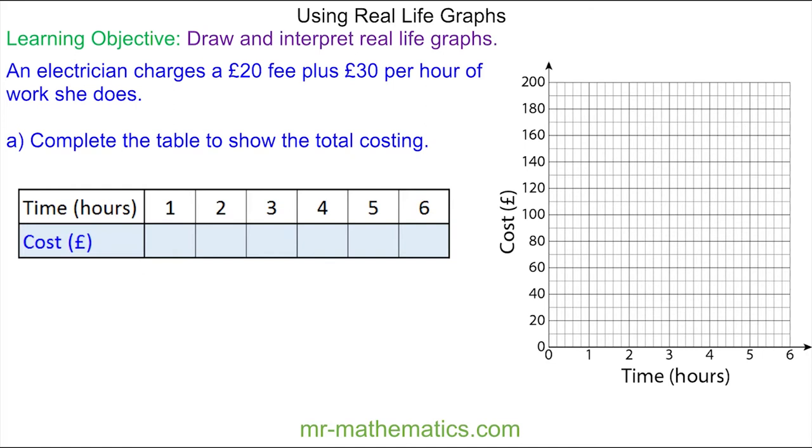Welcome to our lesson on plotting and interpreting real life graphs. In this question, an electrician charges a £20 fee plus £30 per hour of work, and we've been asked to complete the table of results to show the total costing when we've been given the time.